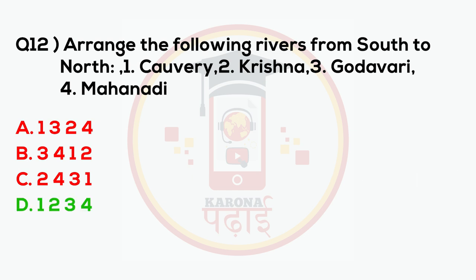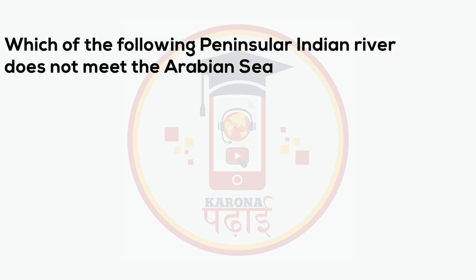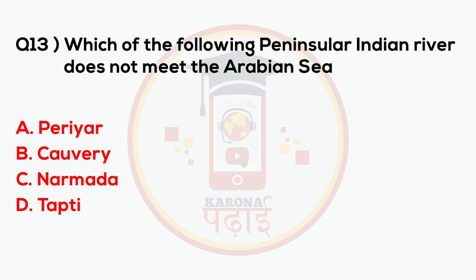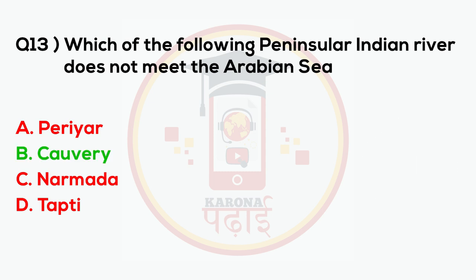The answer is 1, 2, 3, 4. Which of the following peninsular Indian rivers does not meet the Arabian Sea? Kaveri.